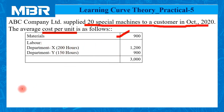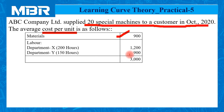Labor: Department X — 200 hours, amount Rs. 1,200. Department Y — 150 hours, amount Rs. 900. And the total cost per unit is Rs. 3,000.